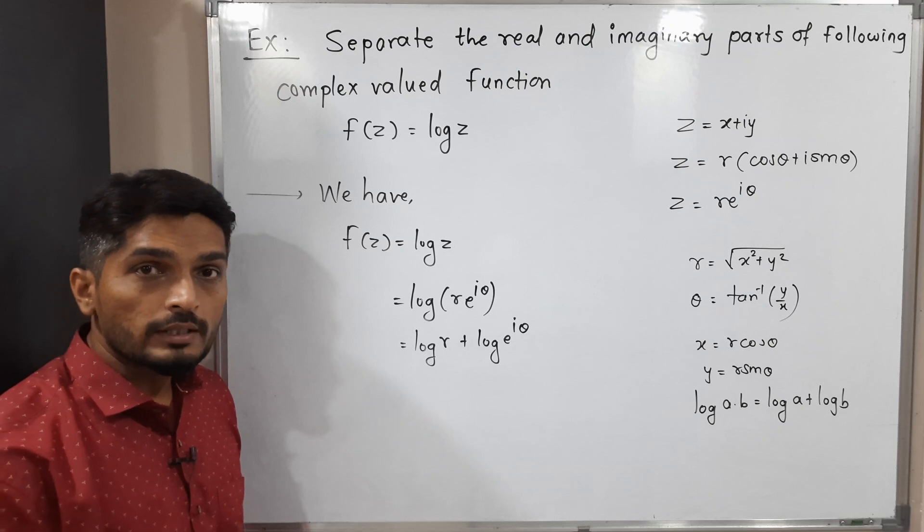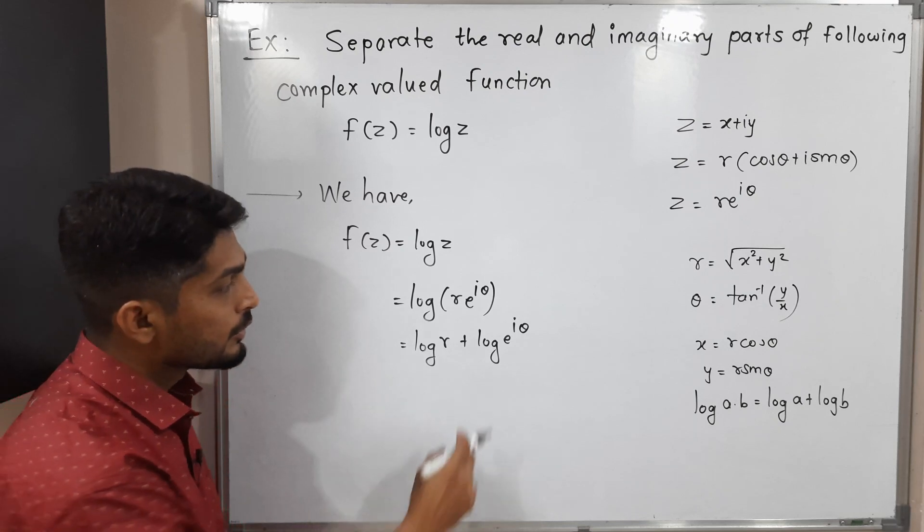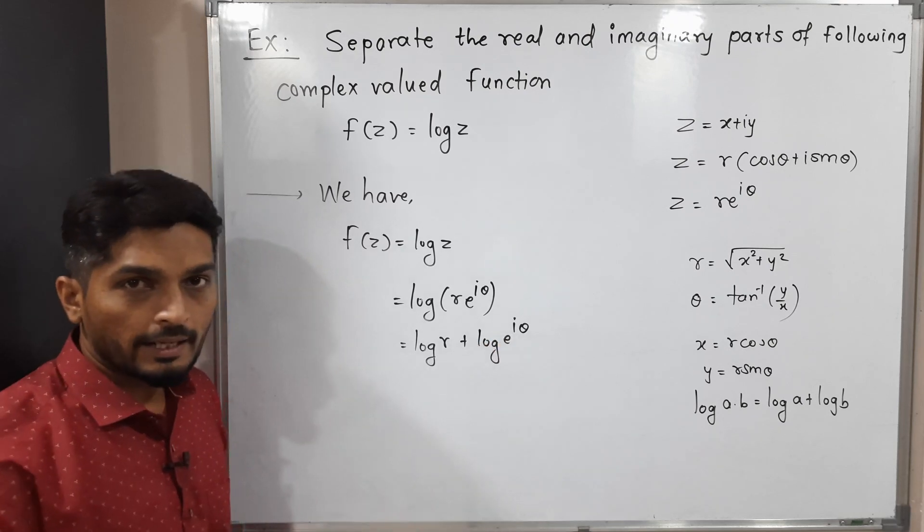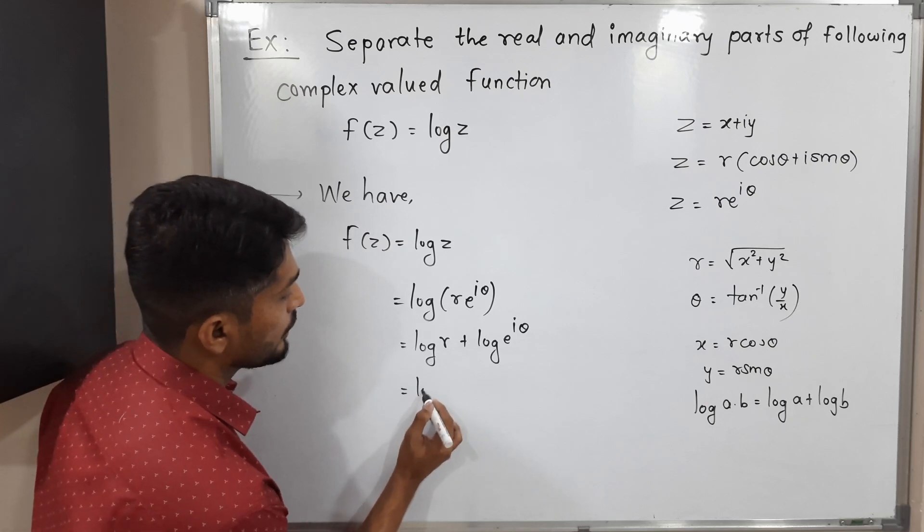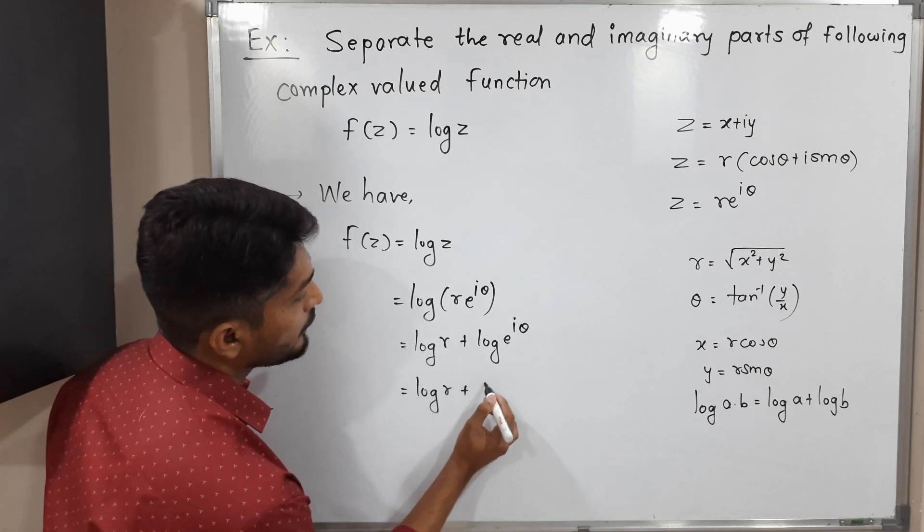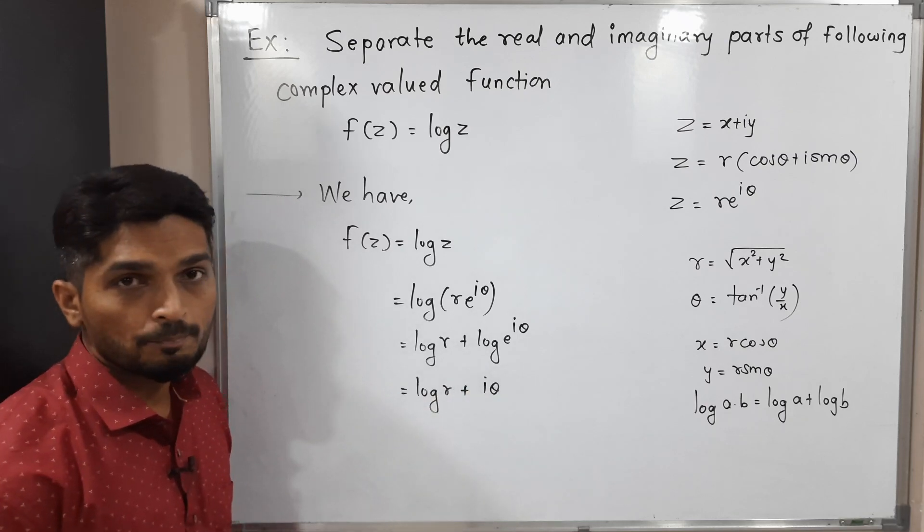Basically, that log is log base e. So that's why log and e will get cancelled. This is equal to log r and we will have simply iθ.